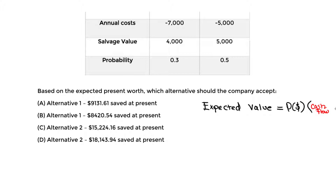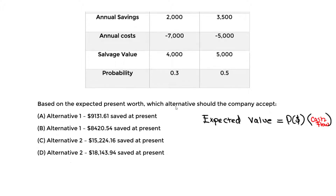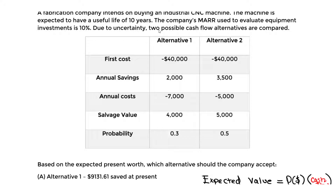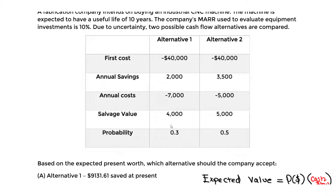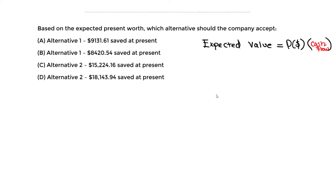So the expected value is probability times cash flow. What we're going to do is first find the expected value of each cash flow component for alternative one, then convert everything back to present worth. We'll do the same for alternative two, then compare which requires less money put down at present.